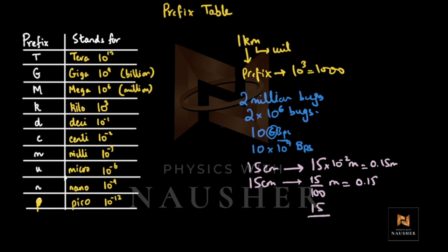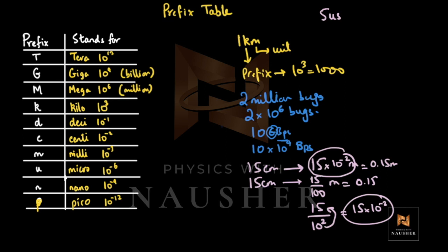From grade 8 you know that 15 ÷ 100 gives the meter value. Using indices: 15 ÷ 10² = 15 × 10⁻² — exactly the same result. Another example: your computer response time is 5 microseconds. That means the response time is 5 × 10⁻⁶ seconds, because second is the unit and micro is the prefix with value 10⁻⁶.